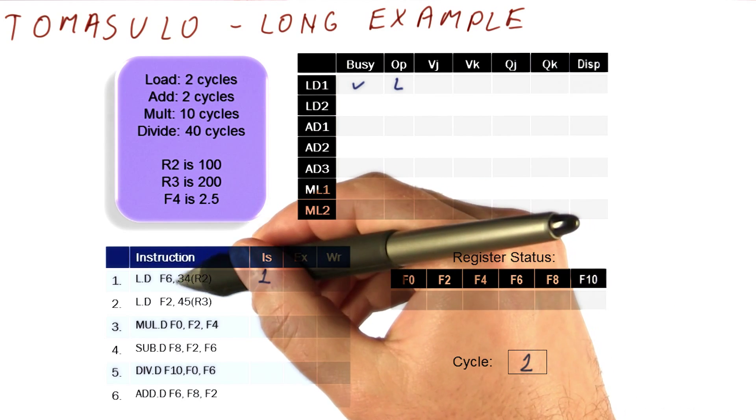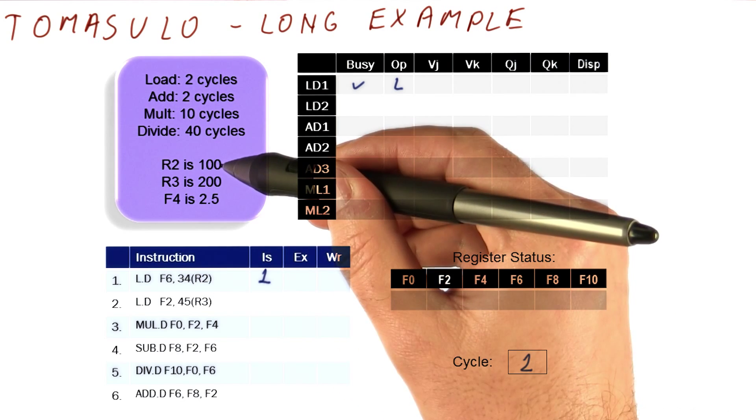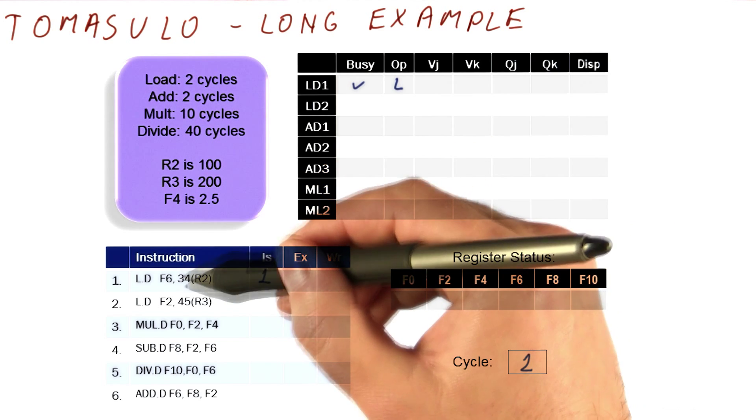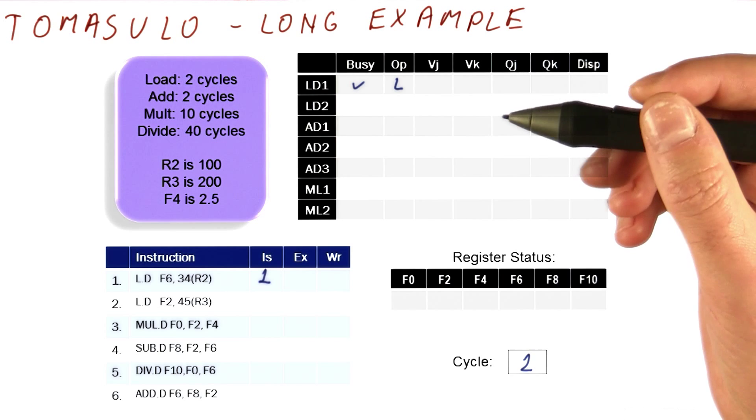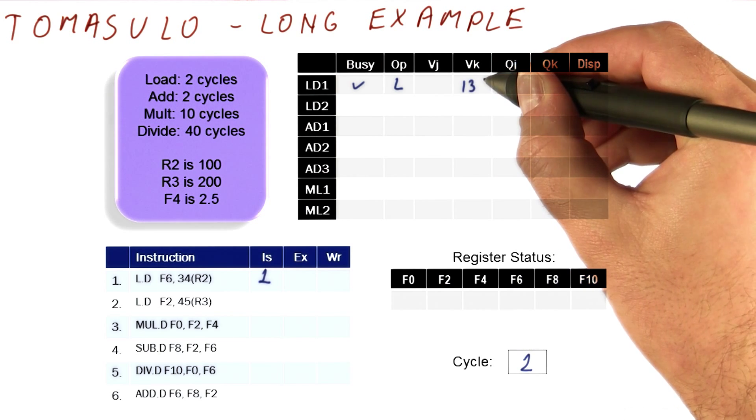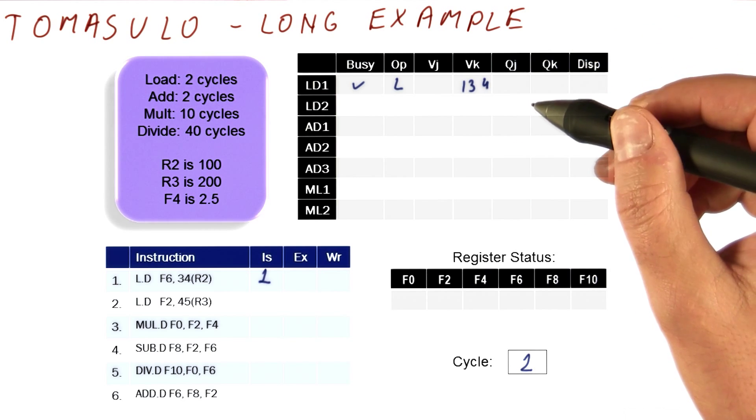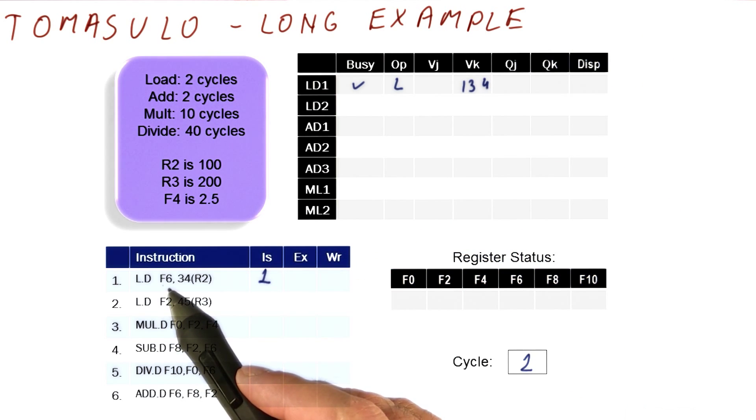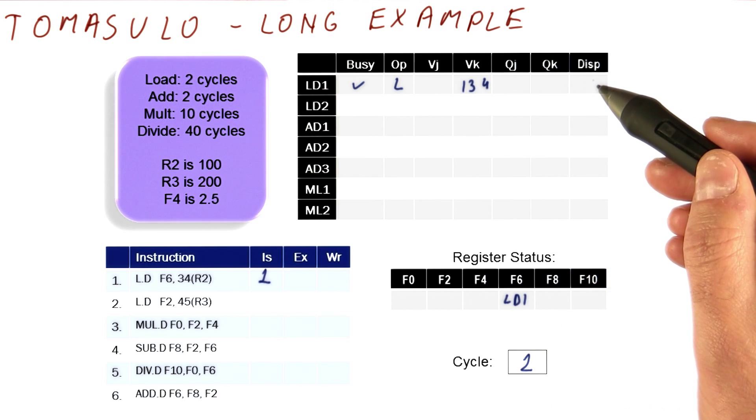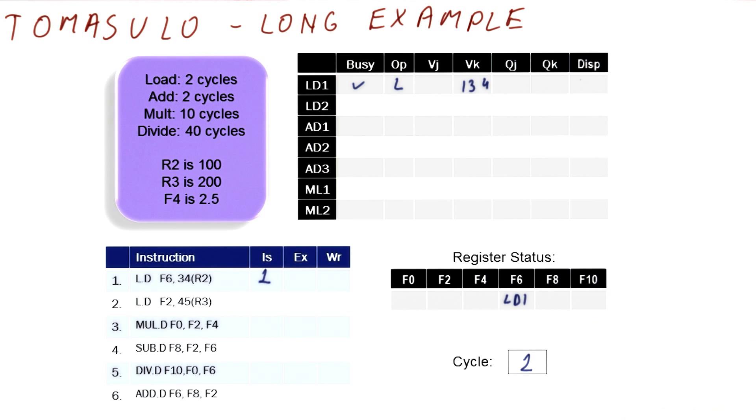Now the load uses an address, it doesn't really use a value. So in this case, we will use R2, which is 100, and add 34 to it. That address will be computed before we put it in the load store queue. So this value is noted here as 134. We are not waiting for anything, but this load will produce a floating point value and put it in F6. So we need to rename F6 to point to load one. The load doesn't dispatch in the same cycle because we said that we cannot do that. So this concludes the issuing of this load.